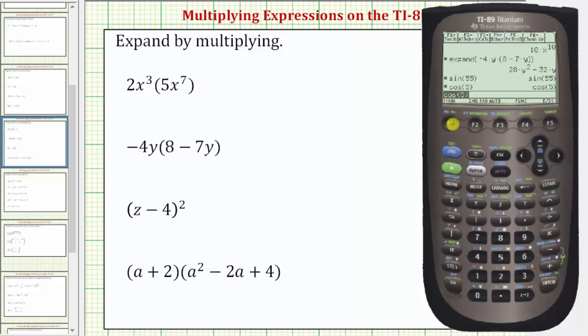So we press second F1, either arrow down to number two and press enter, or just press two and then enter. This clears the screen and also clears any values stored for any variables. And now we can go ahead and find these products using the expand function under the algebra menu which is F2.